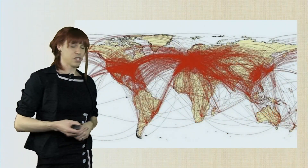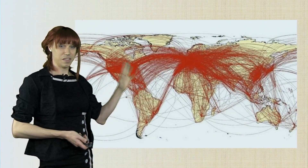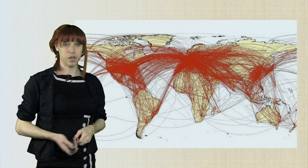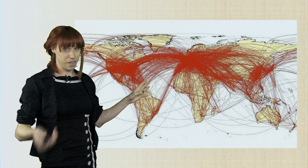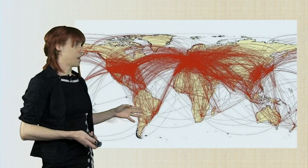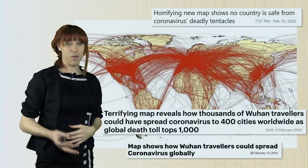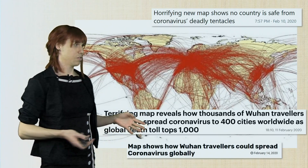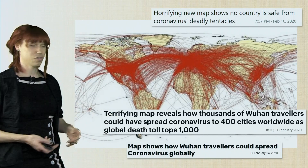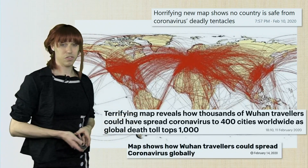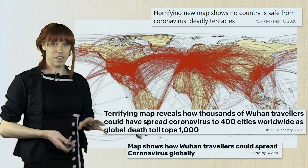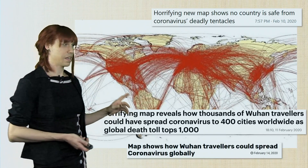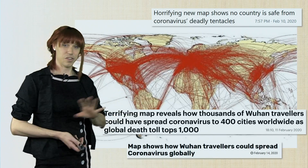I'm going to start with this map right here, which has been tweeted and shared — especially by certain news outlets, particularly tabloid news — showing what they are claiming is the spread or potential spread of the coronavirus. We have these really powerful, emotive headlines like 'horrifying new map shows no country is safe' and 'terrifying map shows thousands of Wuhan travelers spreading across the globe.' But we as geographers want to think critically about this, because this is actually an airline network map — it has nothing to do with the spread of coronavirus at all.